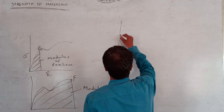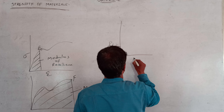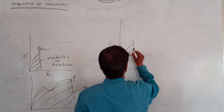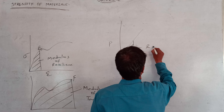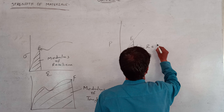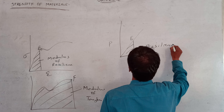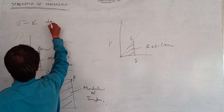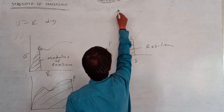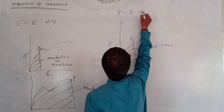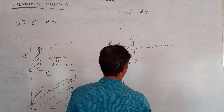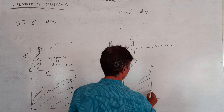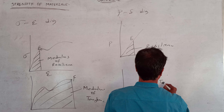That is the load deformation diagram. In the load deformation diagram, up to the elastic limit, this is the resilience. Up to the fracture point in the stress-strain diagram and load deformation diagram, the area represents toughness.